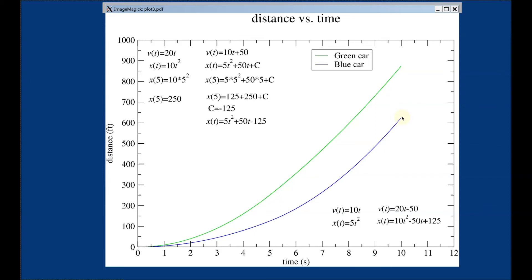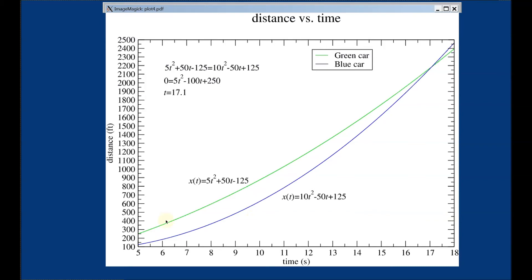How can that be? The green car got off the line quickly — more torque. Now, the blue car is eventually going to pass the green car if it keeps going at the same rate of acceleration. We plotted these curves out until they crossed, setting them equal to each other and solving for t. We find the blue car will catch up to the green car in about 17.1 seconds, at about 2,200 feet — which is quite past the quarter mile.